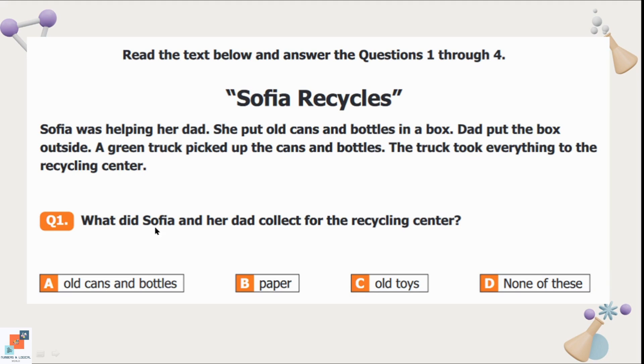Question number 1: What did Sophia and her dad collect for the recycling center? It is given in the paragraph that they collected old cans and bottles. So option A is the correct option here.